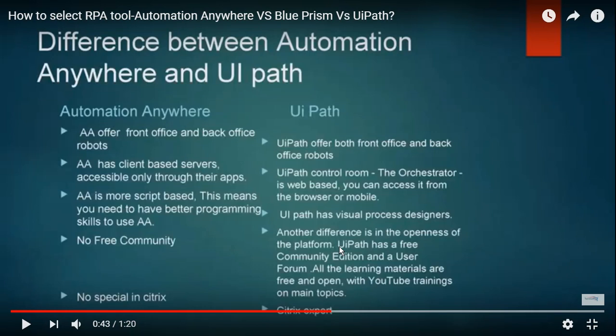For testing, Blue Prism has a very easy process with object-oriented design that is easy to test. UiPath is also easy to test and move into code. UiPath supports multi-bot at very low cost — these are key features involved in tool selection.